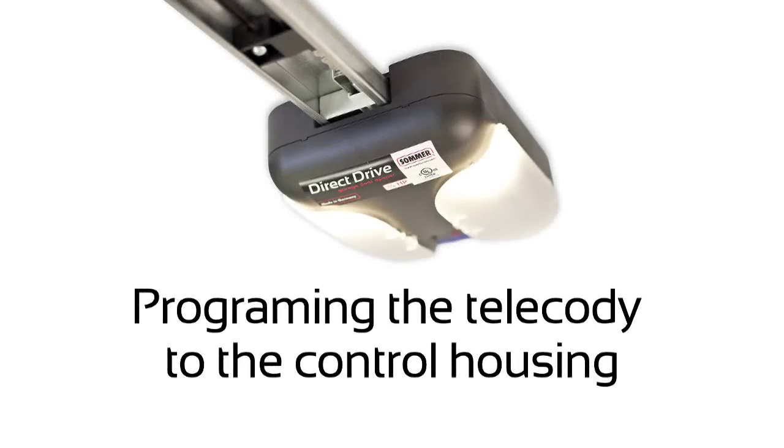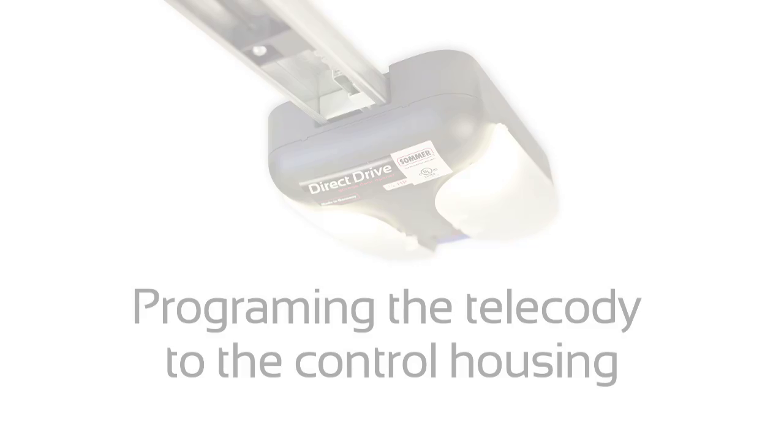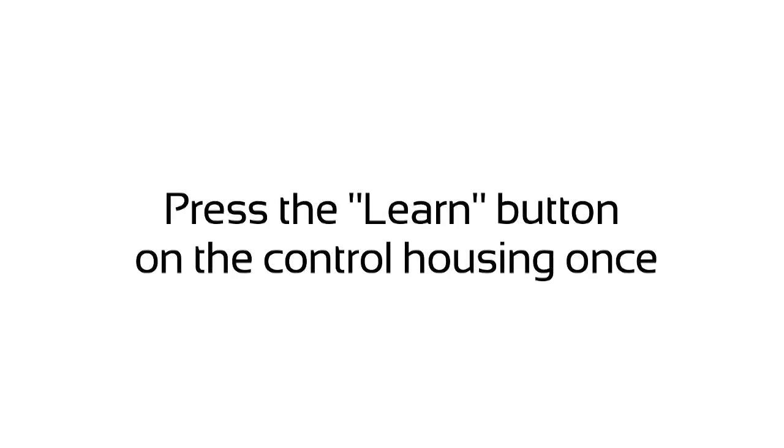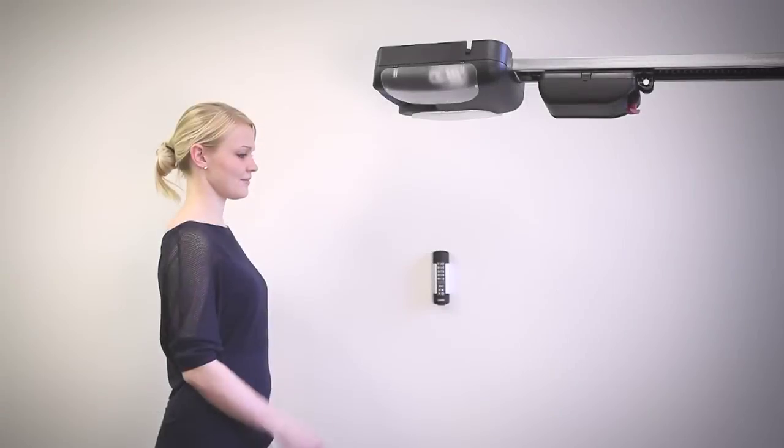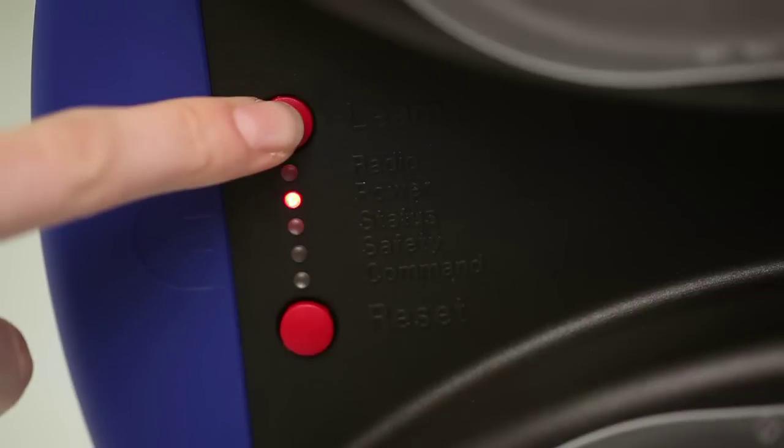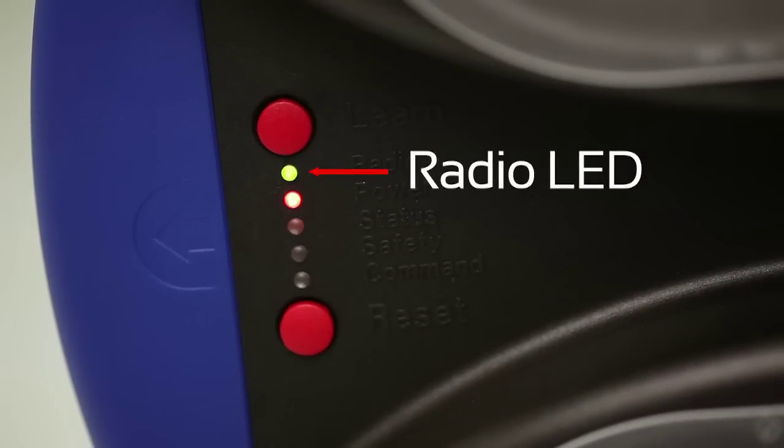Programming the Telecody to the control housing. Press the learn button on the control housing once. You will get a solid radio LED. Enter the entire access code on the keypad.